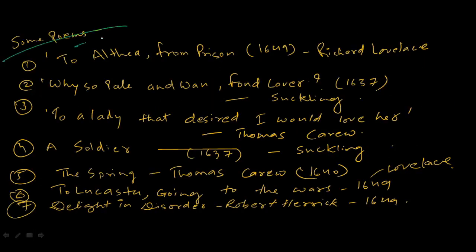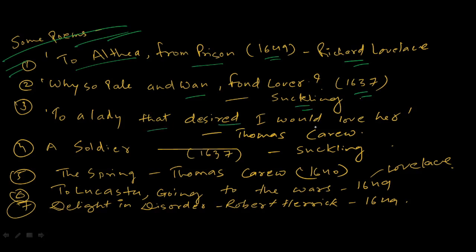Some famous poems by Cavalier Poets: 'To Althea, from Prison' (1649) by Richard Lovelace; 'Why So Pale and Wan, Fond Lover' (1637) by John Suckling; 'To a Lady That Desired I Would Love Her' by Thomas Carew; 'A Soldier' (1637) by Suckling; 'This Spring' (1640) by Thomas Carew; 'To Lucasta, Going to the Wars' (1649) by Lovelace; and 'Delight in Disorder' (1649) by Robert Herrick.